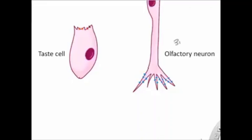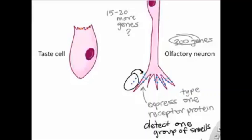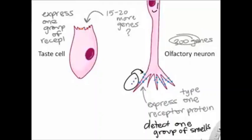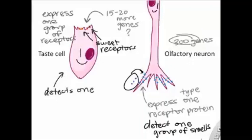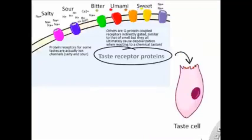There are about 300 different olfactory receptor proteins; each olfactory neuron expresses only one, so it detects one group of related smells. Taste cells probably express more than one receptor protein, but all related to one specific taste — so a cell expressing two or three sweet receptors can only detect sweet. Both olfactory neurons and gustatory cells are thus specialized to detect one type or variety of stimulus.